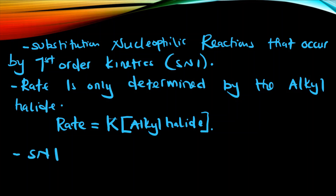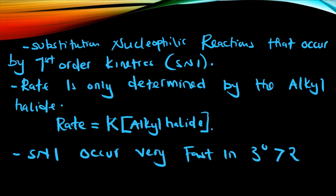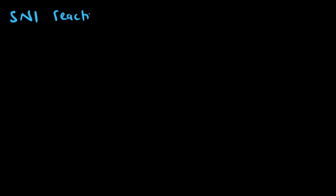SN1 reactions occur very fast in tertiary alkyl halides as compared to secondary alkyl halides, and they occur very slowly in primary alkyl halides.